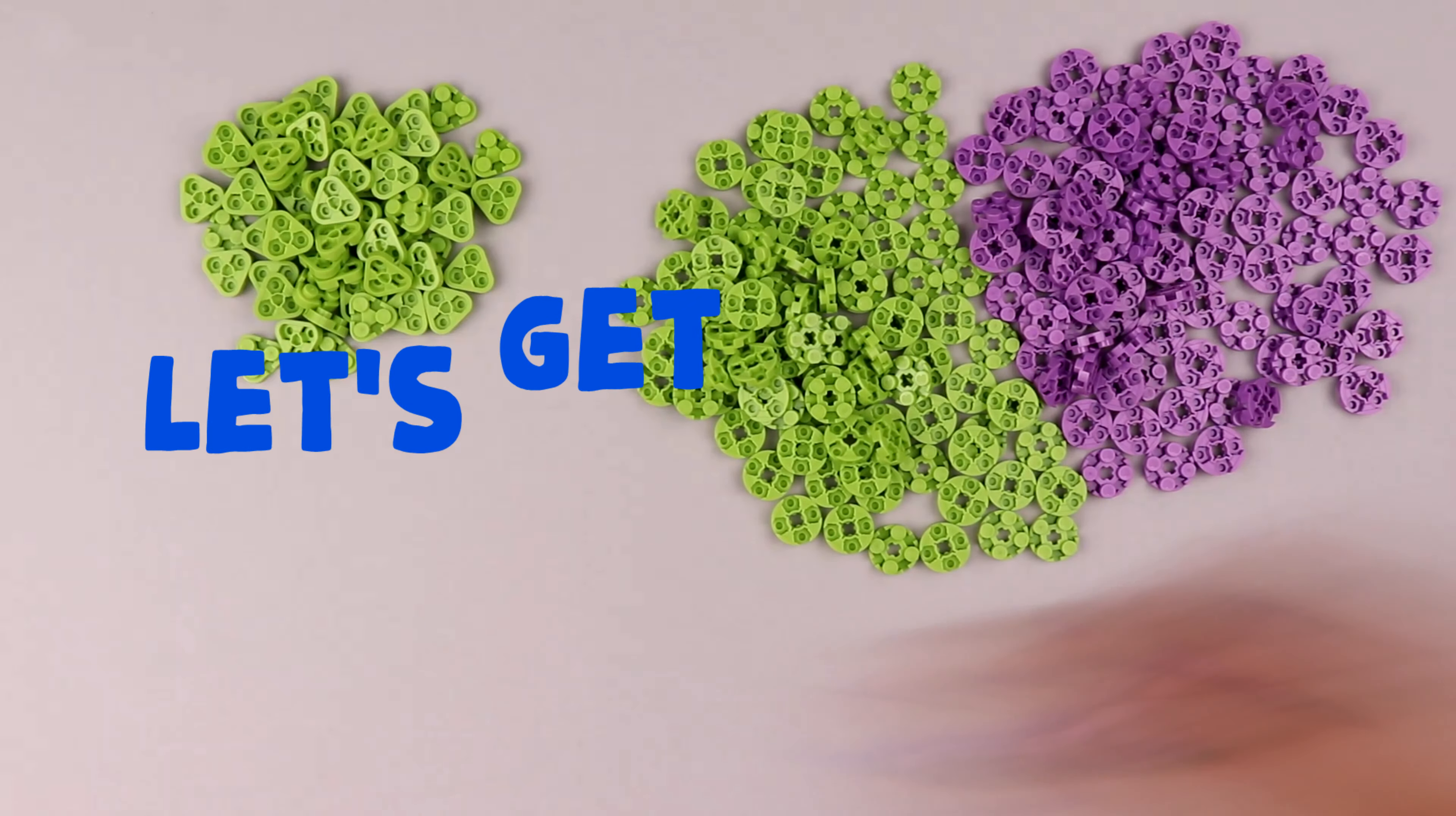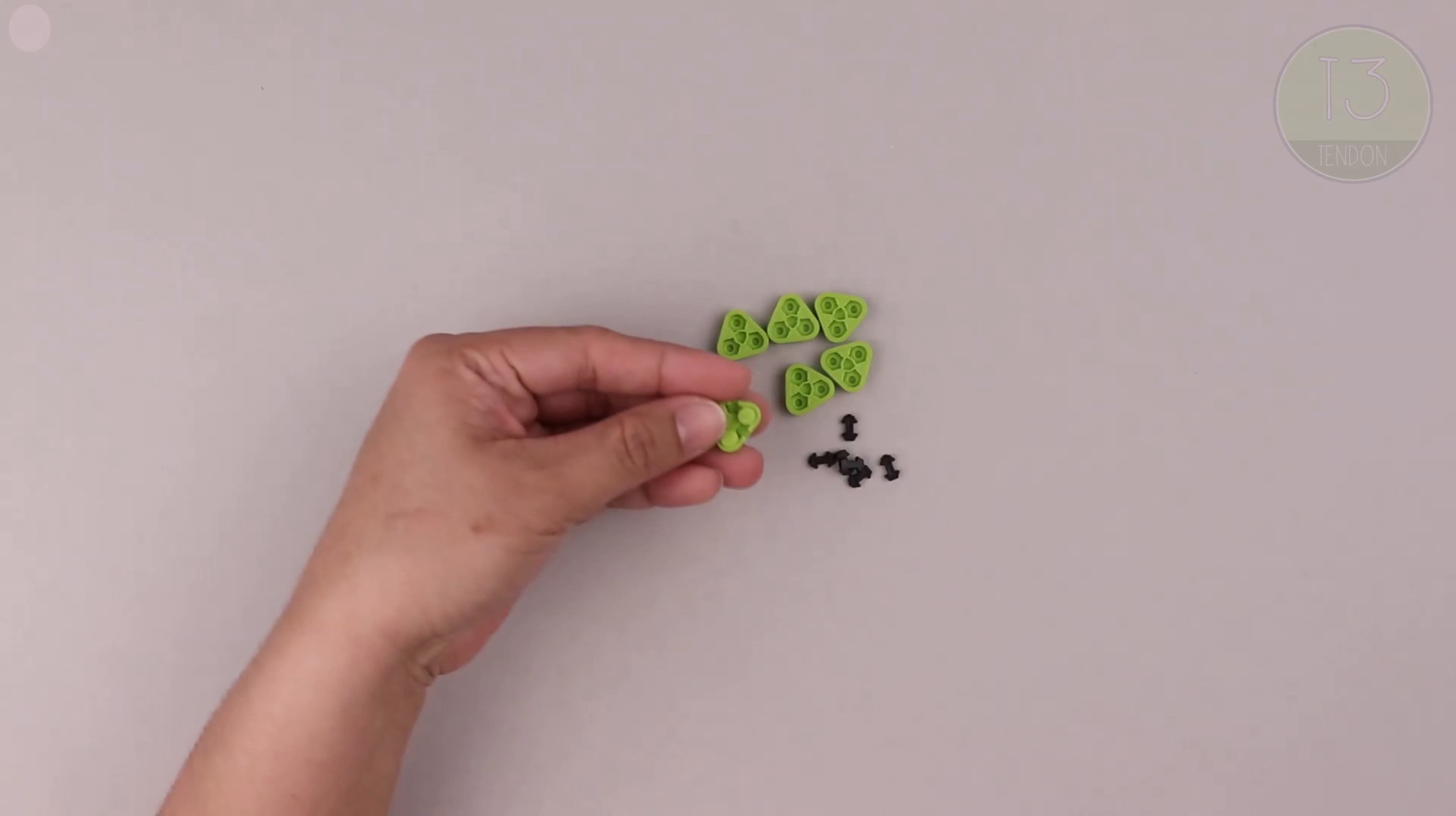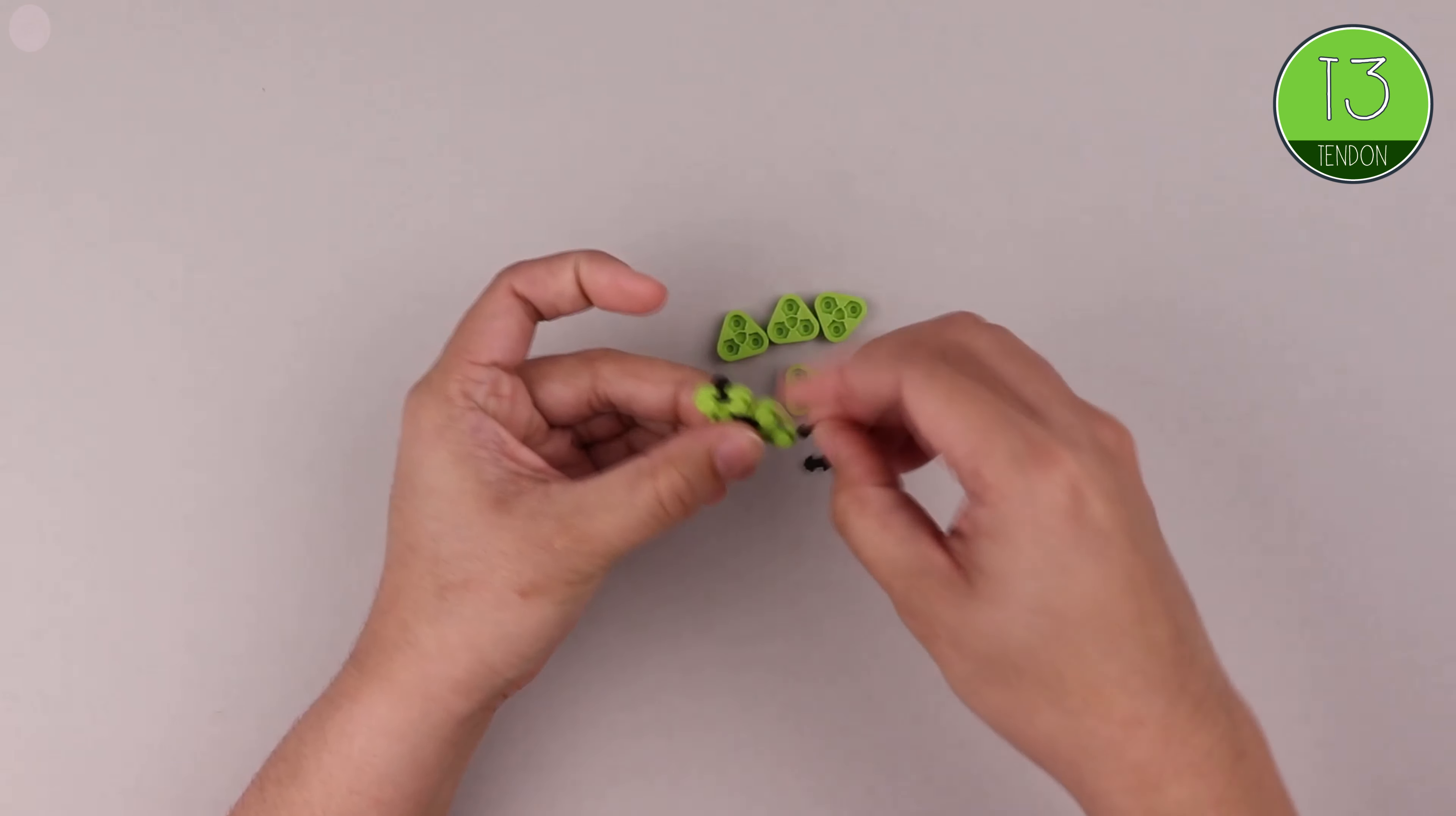Alright fam, settle in and let's get making. We're going to start by building the top of Octo's head. So we're using T3 tendons, green triangles and the first thing we do is we make a lovely circle.